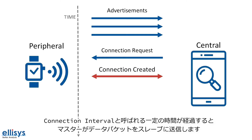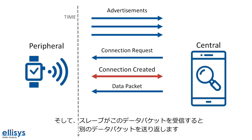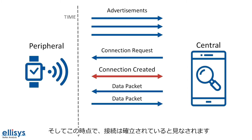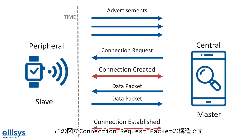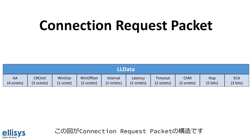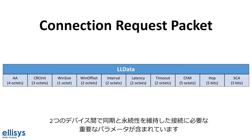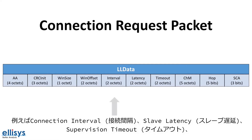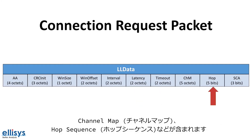After a certain period of time called the connection interval, the now-called master sends a data packet to the slave. Once the slave receives this data packet, it sends back another data packet, and at this point the connection is considered established. A connection request packet includes a few important parameters needed to keep the connection synchronized and persistent between the two devices, such as the connection interval, the slave latency, the supervision timeout, the channel map, and the hop sequence.